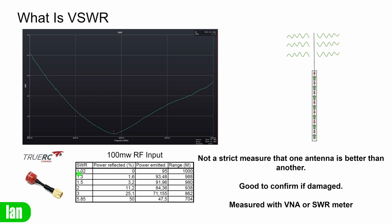Measuring SWR can be done with various pieces of equipment. You can use a VNA or an SWR meter. In ham radio it's fairly straightforward to measure SWR with an SWR meter. At the frequencies we use in FPV things get a little bit more difficult, but you can get some VNAs from the likes of Amazon that will give you an indication. However, you shouldn't take those pieces of equipment as strict fact because the very good lab equipment costs many thousands of dollars.